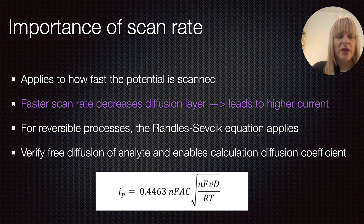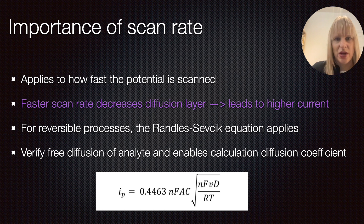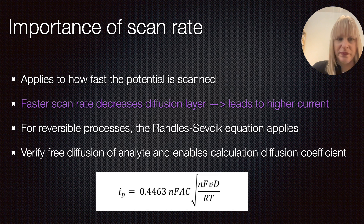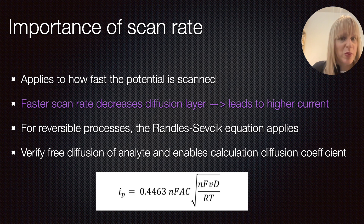What I always find a bit counterintuitive is that when you increase the scan rate you decrease the diffusion layer, so you measure higher currents. It's very important that when you do your experiments, you keep all of these parameters the same. By changing your scan rate, there are some important processes that you can monitor. If we have a reversible process — where your cyclic voltammetry shows exactly a symmetrical spectrum — we can look at one very important equation, which is the Randles-Sevcik equation. In this equation, N is the number of electrons involved in the reaction, along with the Faraday constant, your surface area, and it also depends on your scan rate and the diffusion coefficient.